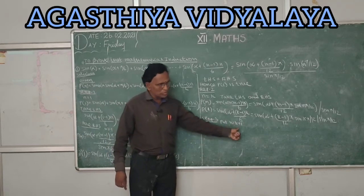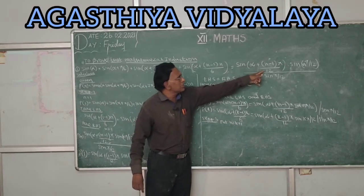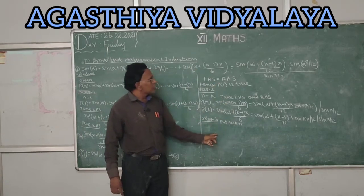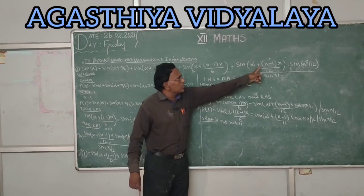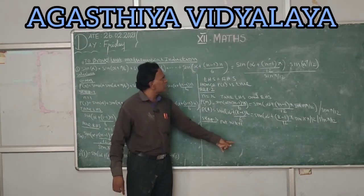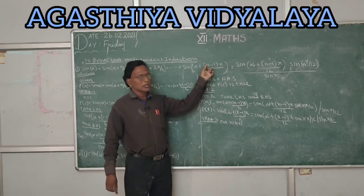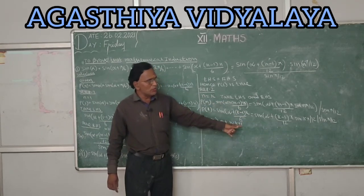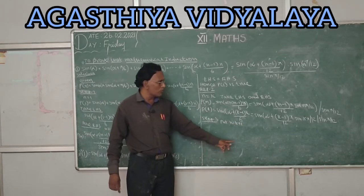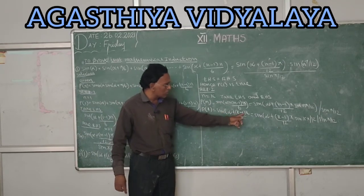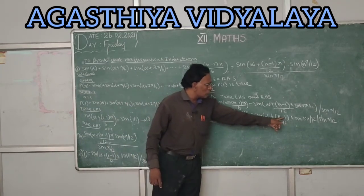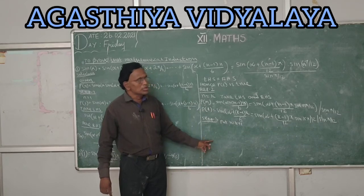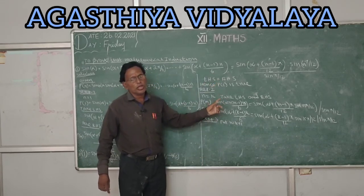Step 3: put n equal to k+1. We take the RHS from Step 2 and add the next term corresponding to n equal to k+1. Using the product-to-sum formula sin A · sin B = (1/2)[cos(A−B) − cos(A+B)], where A is (α + (k−1)k/12) and B is (k−1)/12, we substitute and simplify to show P(k+1) is true. Hence P(k) being true implies P(k+1) is true, and all conditions are verified.